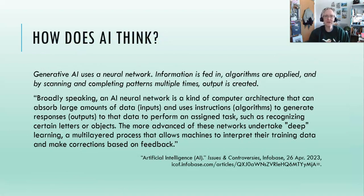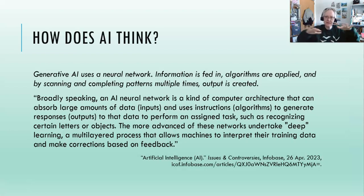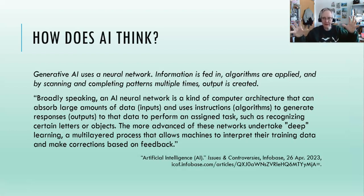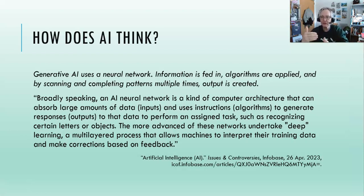So the first question that often springs to mind when talking about artificial intelligence is: how does AI think? Well, it doesn't. It uses a neural network at this point in its development. Information comes in as disaggregated large-batch data, is fed into the system, and it goes through a series of decision-making points in this neural network. It follows certain logic or rules — those are the algorithms applied to this data. It scans and looks for patterns, matches those patterns, and completes those patterns with disaggregated data over and over again. That creates the output we see as a conversation with this program — but it's not really a conversation.